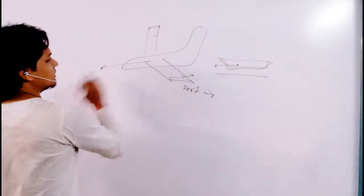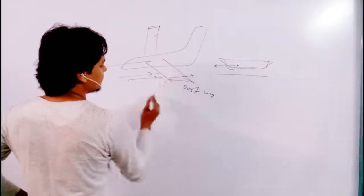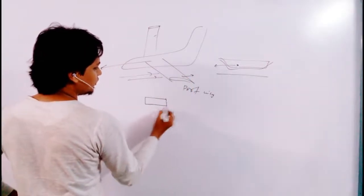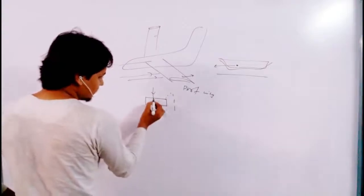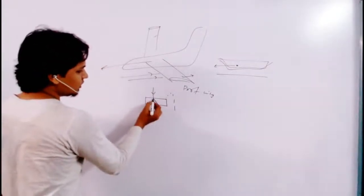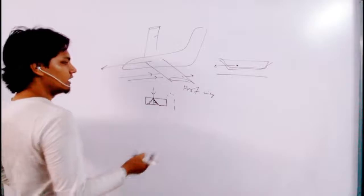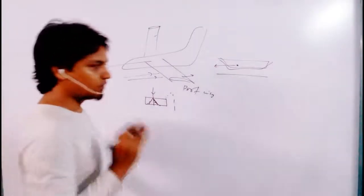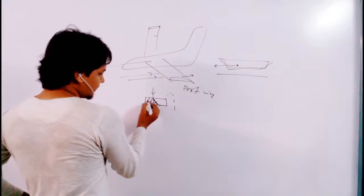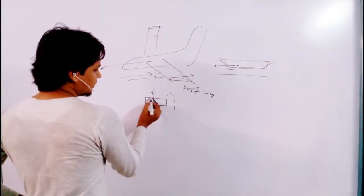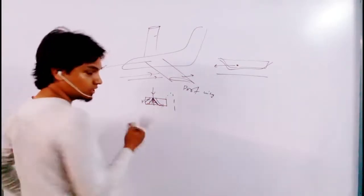This airplane will be going in the front direction, so the direction of airflow will be like this. Now, over the wing, if I draw the top view — this is the top view of the port wing. Air is coming like this. Air, or any fluid when it is flowing, flows from high pressure to low pressure. So if it turns one way, pressure is more on that side and less on the other.